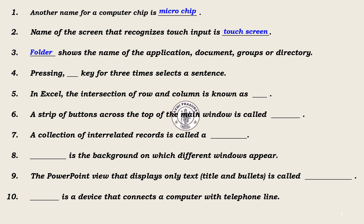Pressing dash key 3 times selects a sentence. Answer: pressing Ctrl 3 times selects the sentence.